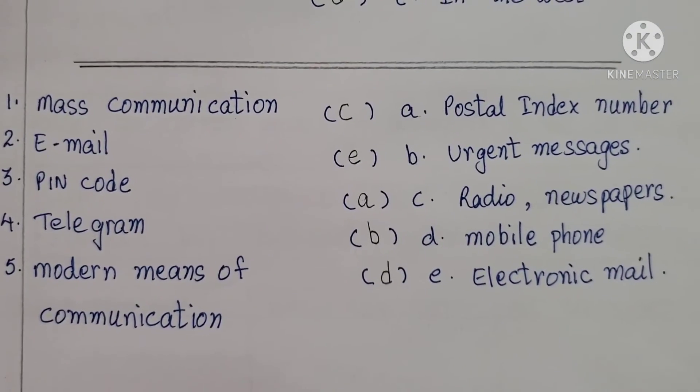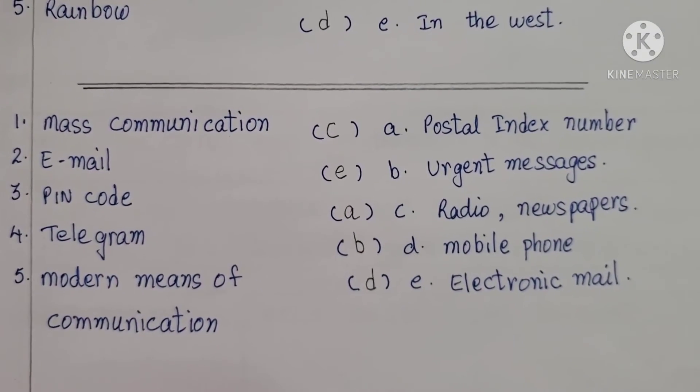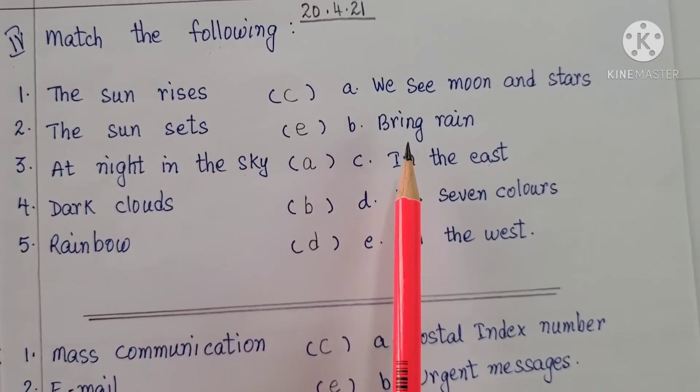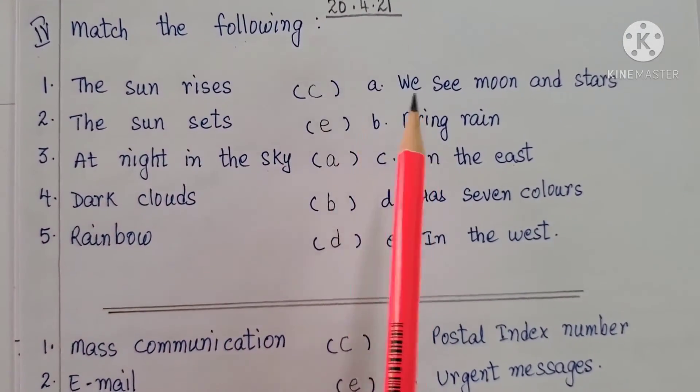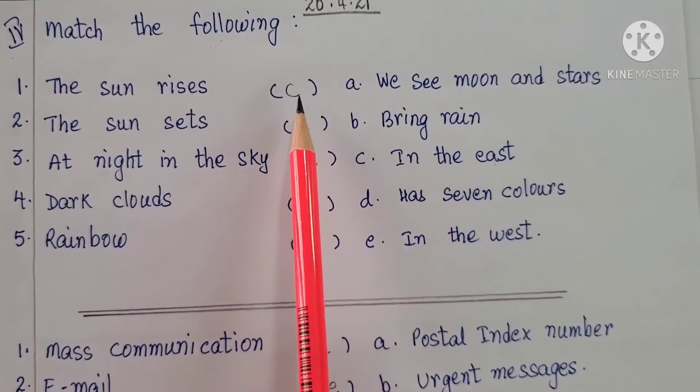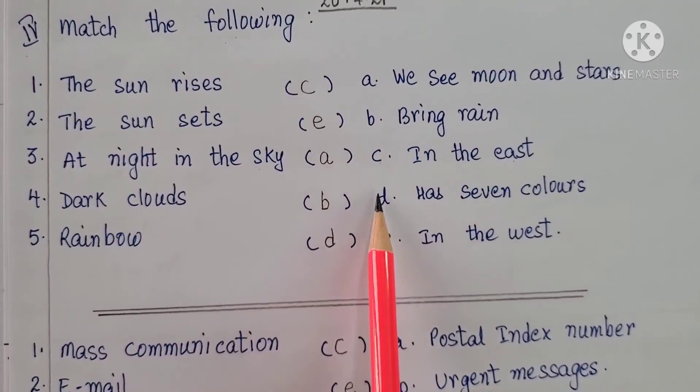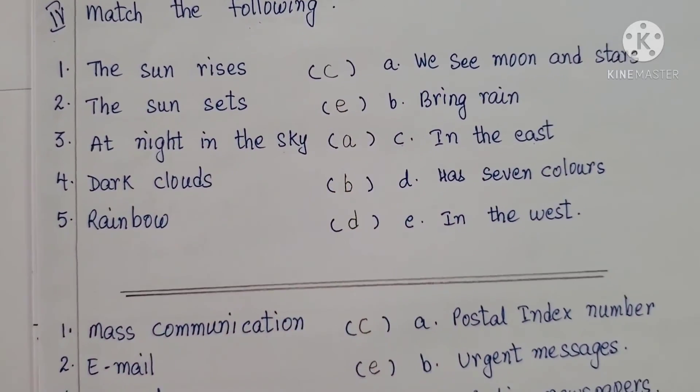So in this way you all need to first read the column A and also the column B and write the correct answer in the brackets. I mean correct alphabet which it's matching with in the brackets.